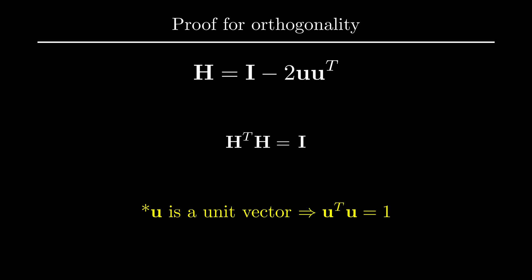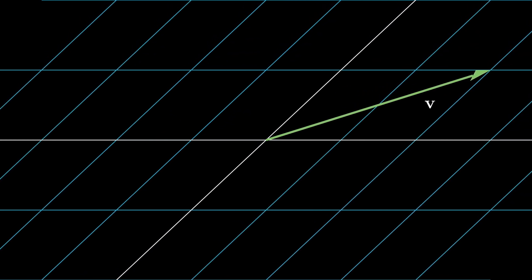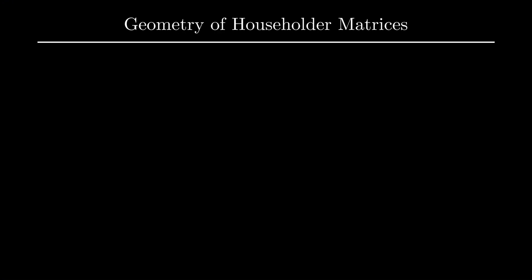Okay, now let's talk a little bit about what a Householder matrix is geometrically, and what this u vector actually means. Recall that matrices can be thought of as linear functions that map vectors from one vector space to another. So in the 2x2 case, let's say this is our unit vector, and we define a Householder matrix using this unit vector.